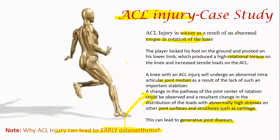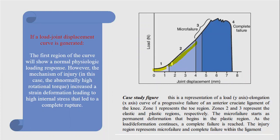The ACL injury graph again shows four regions: the toe region, linear region, micro failure, and complete failure. The first region shows a normal physiological loading response. Increased strain deformation leads to internal stress and rupture because the rate of deformation was high due to high rotational torque, causing complete failure abruptly. Zones two and three represent elastic and plastic regions. The injury region represents micro failure and complete failure within the ligament.